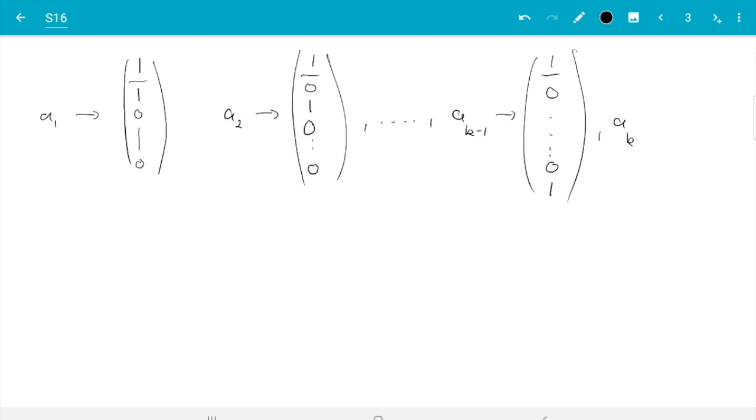And finally a_k was the special one, the reference level, that maps to still 1 for the intercept, but then zeros throughout here. And if you check this out, that is k vectors here, which are linearly independent. They form a basis of a k-dimensional space.